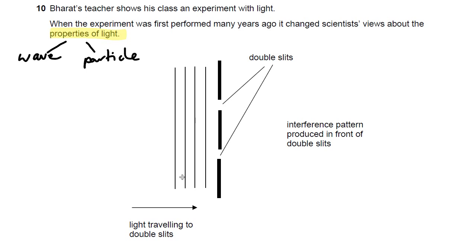These wave fronts here, these lines, they are like the peaks of the wave, like the crests of the waves, coming towards these double slits. And what you actually get is this diffraction pattern here, where the wave spreads out into these semicircles, and also from the other side as well.